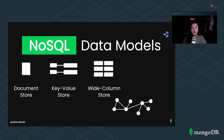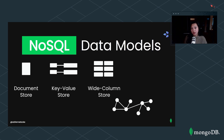Then there's the wide column store, where related data is stored as a set of nested key-value pairs within a single column. The reason we call it a wide column store is that you might store a name and address within a customer column, and an item and price in a product column. These columns all belong in a single place, and querying each row gives you all of that related data. These are your ScyllaDB's and Cassandra's.